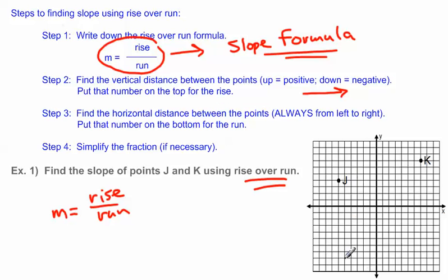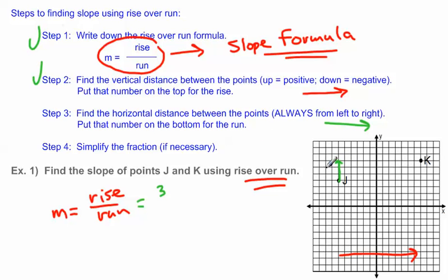Going from left to right, J comes first and K comes second. From J to K, I'm going up 1, 2, and 3 — so the rise is a positive 3. Step three: find the horizontal distance between the points going from left to right — that goes on the bottom for run. The run is over 13 spaces. So rise is 3 and run is 13. Step four says simplify the fraction if necessary — I can't simplify this, so the slope between points J and K is 3 over 13.